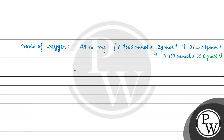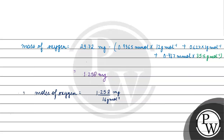Solving this gives mass of oxygen = 29.72 − 11.238 − 0.624 − 16.58 = 1.258 mg. Moles of oxygen = 1.258 mg / 16 g/mol = 0.0786 millimoles.